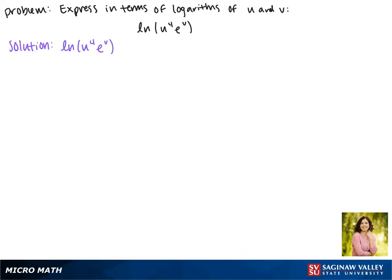Since what's inside of our logarithm is being multiplied, we can break this up using addition. So this becomes the natural log of u to the fourth plus the natural log of e to the v.